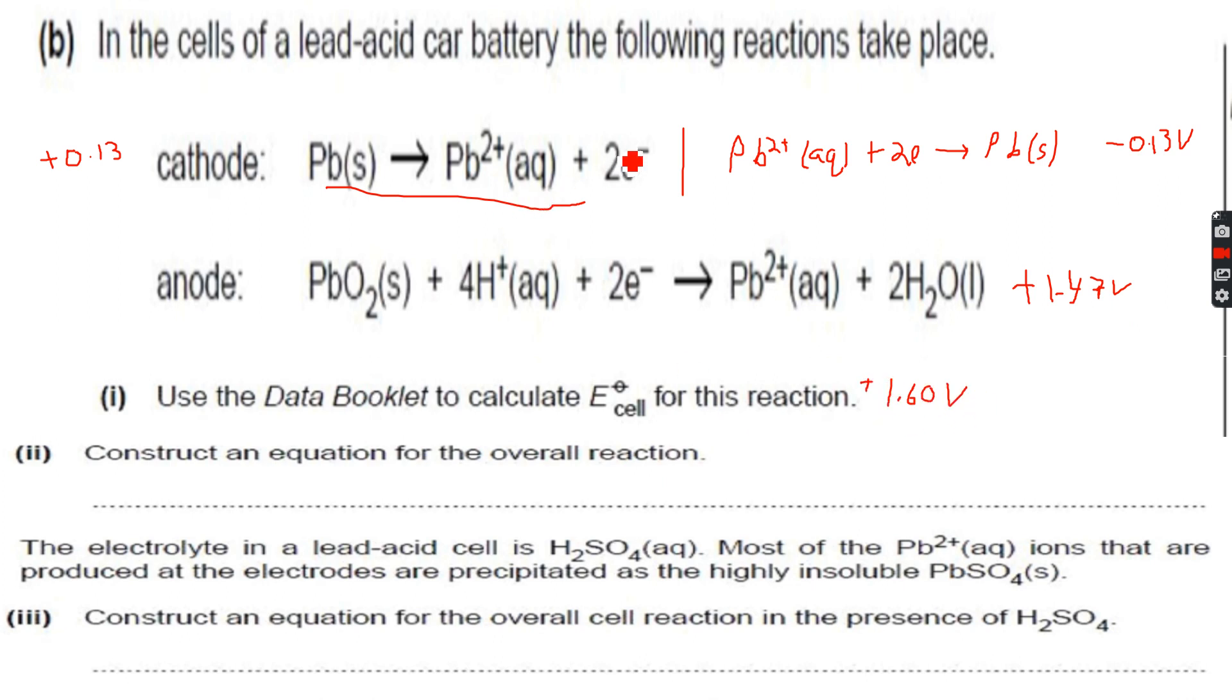Construct an overall equation. Two electrons cancel out, so we have Pb(s) plus PbO2(s) plus 4H+(aq) gives...